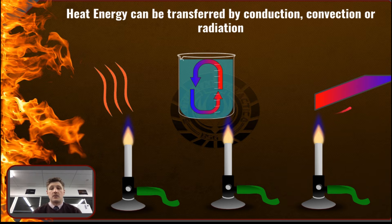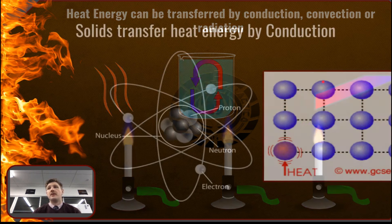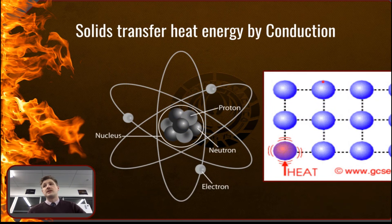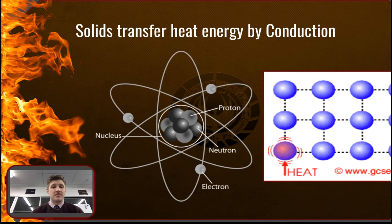Finally, conduction is where a solid object is heated up and the heat is transferred along that object. To unpack why these are the methods of transfer, we need to do a little bit of chemistry. Some of you may have already done the chemistry unit — this will be revision. When heat is transferred by conduction, the atoms remain in a fixed solid position. That's what makes something solid.